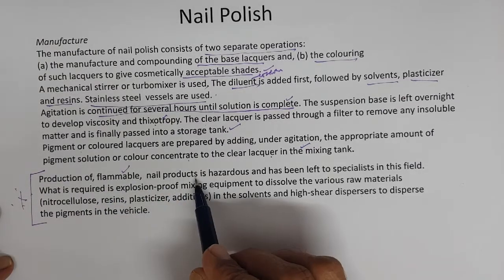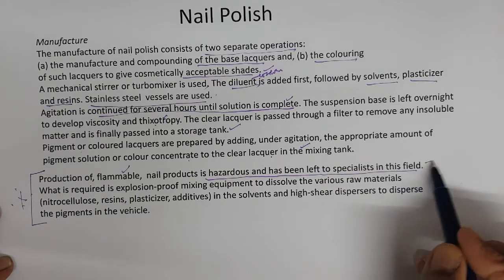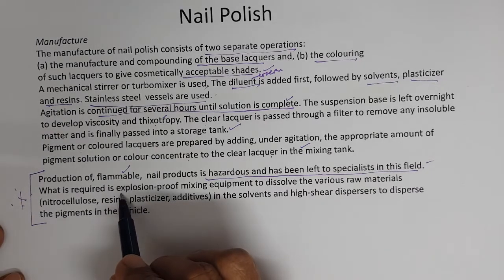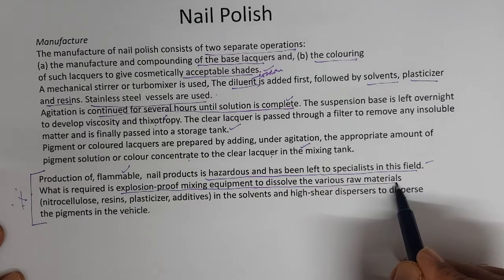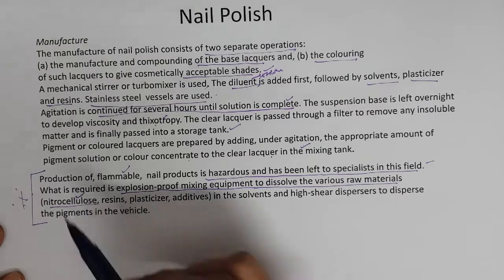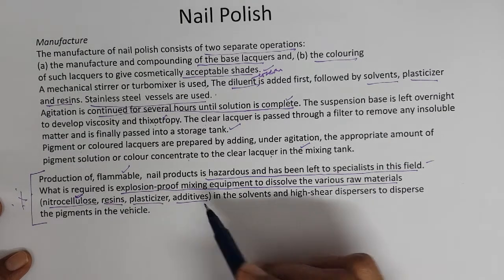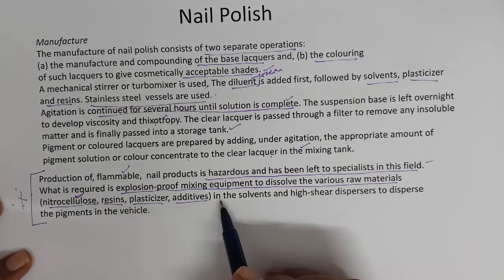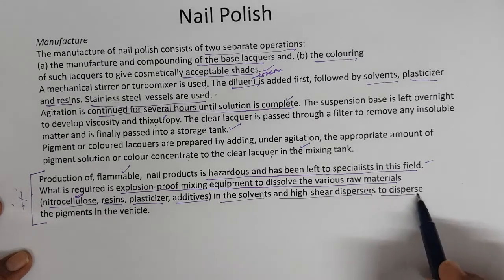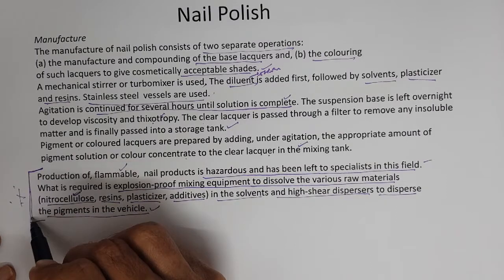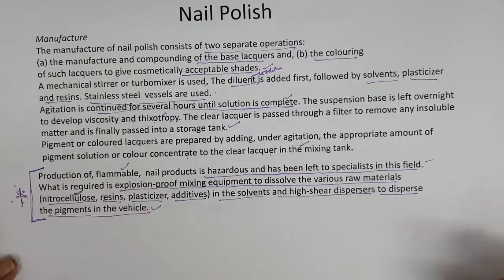Production of flammable lacquer products is hazardous and must be left to specialists. Because all the solvents used are flammable, explosion-proof mixing equipment is required to dissolve nitrocellulose, resins, plasticizers, and additives, and high-shear dispersers are needed to disperse the pigments in the vehicle. All operations must be conducted in explosion-proof equipment and environments — this is a very important aspect of nail polish manufacture.